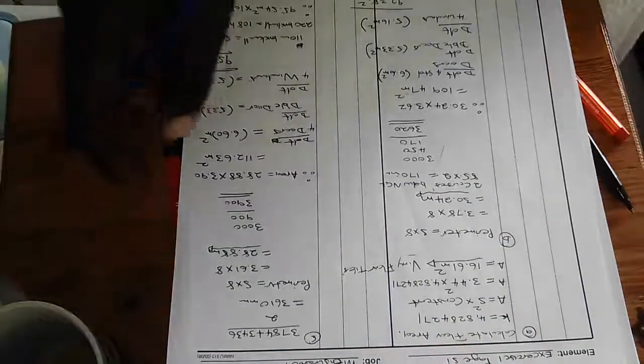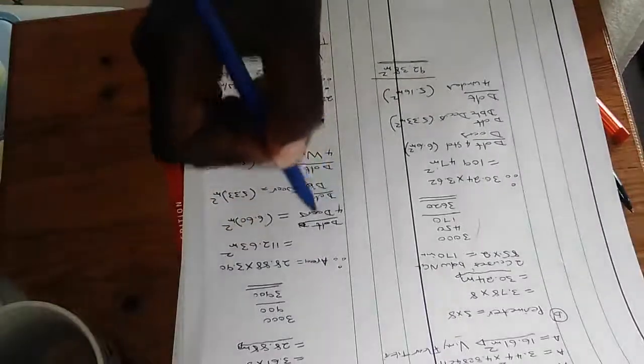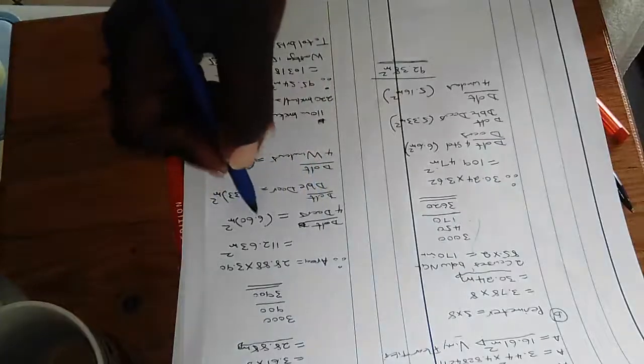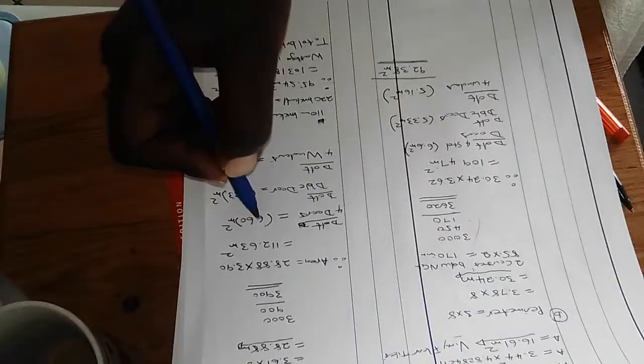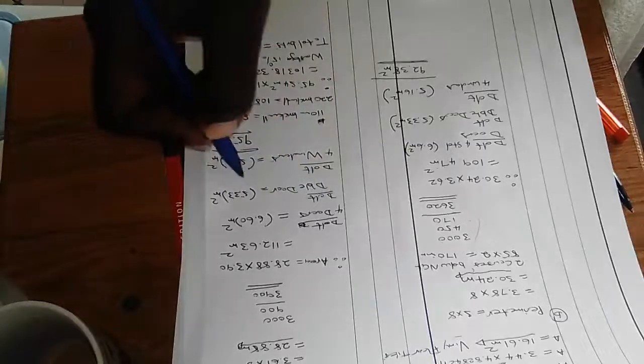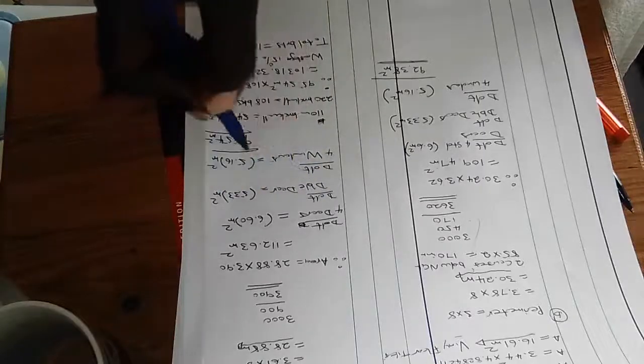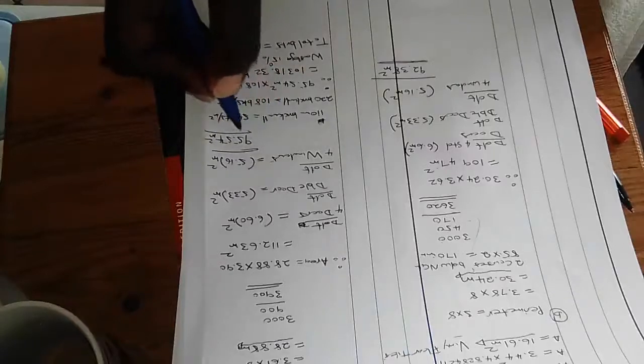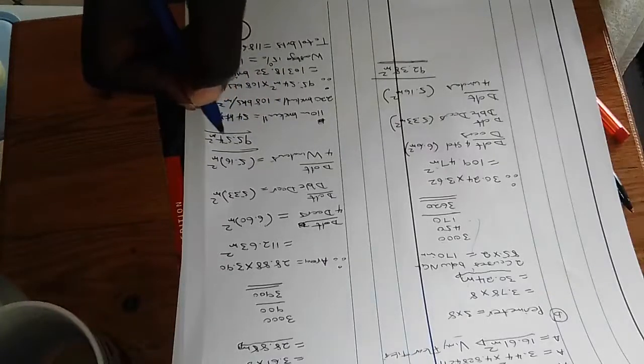And then again, we need to deduct for the openings for the doors, because we will not be putting bricks where the doors are. So we need to deduct 6.6 for the four doors, 5.33 for the double door, and 5.16 for the windows. This gives us 95.54 square meters of brick area.